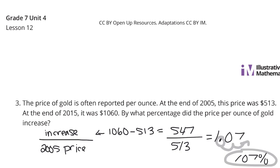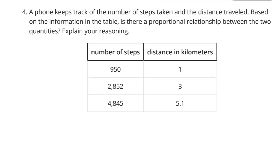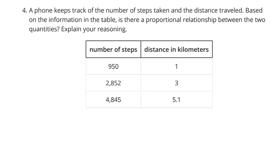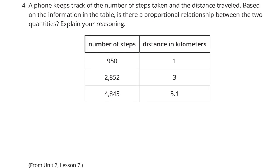Continuing on to question four. A phone keeps track of the number of steps taken and the distance traveled. Based on the information in the table, is there a proportional relationship between the two quantities? Explain your reasoning. And, as a note here, this is review from Unit 2, Lesson 7.